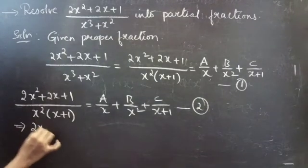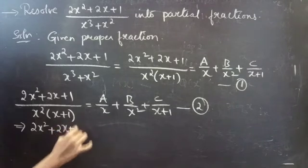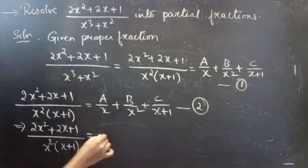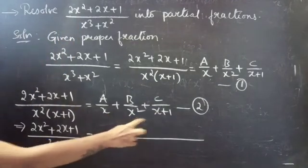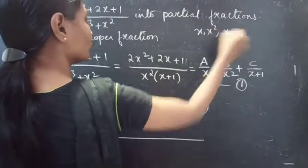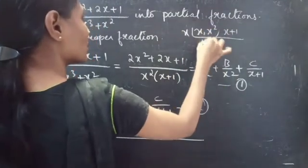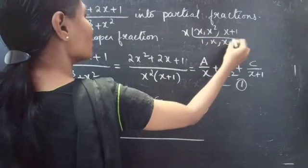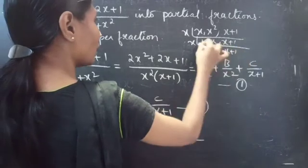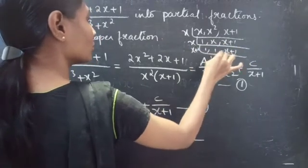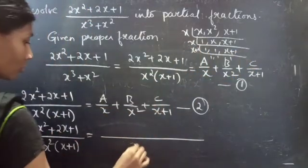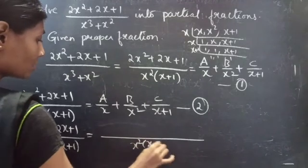Again, you can write 2x squared plus 2x plus 1 by x squared into x plus 1. Now take the LCM for x, x squared, and x plus 1. x times x is x squared, and x plus 1 remains the same. So x times x times x plus 1 gives x squared into x plus 1.